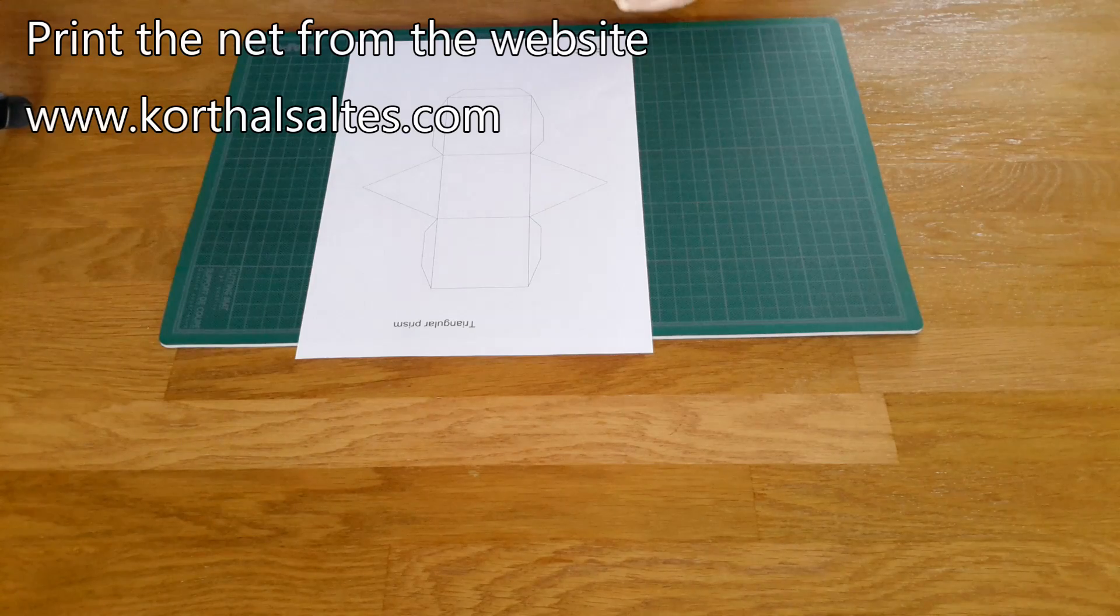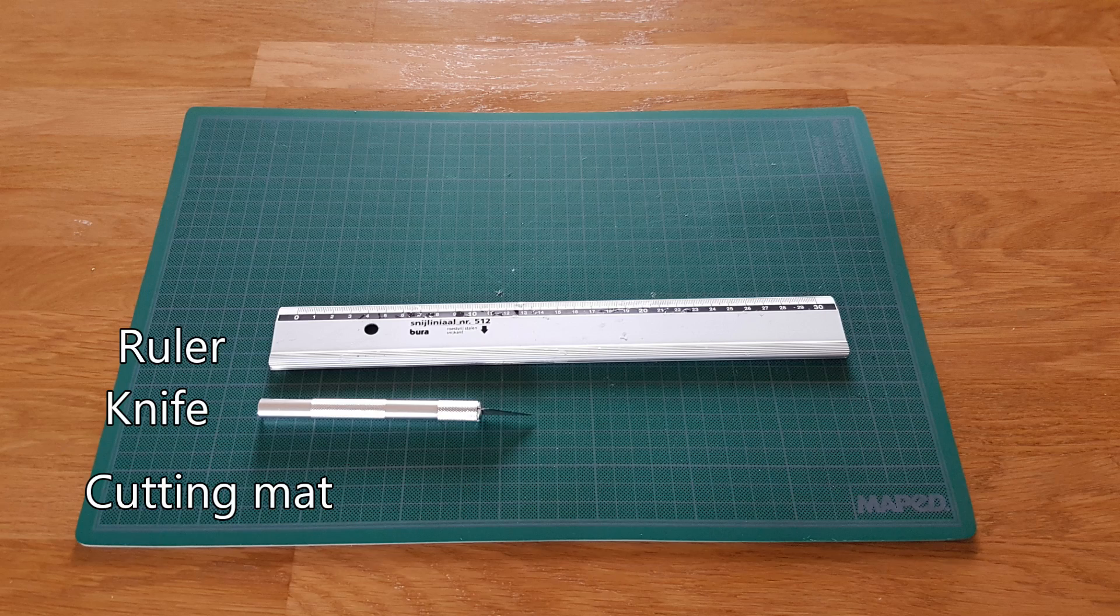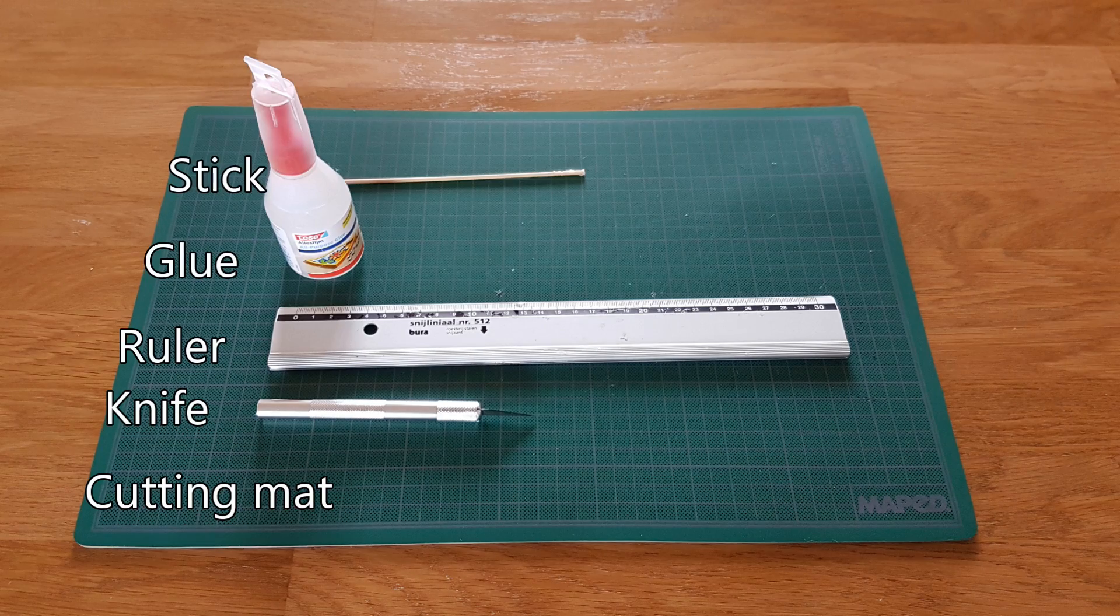Print the net. You'll need a cutting mat, knife, ruler, all-purpose glue and stick.